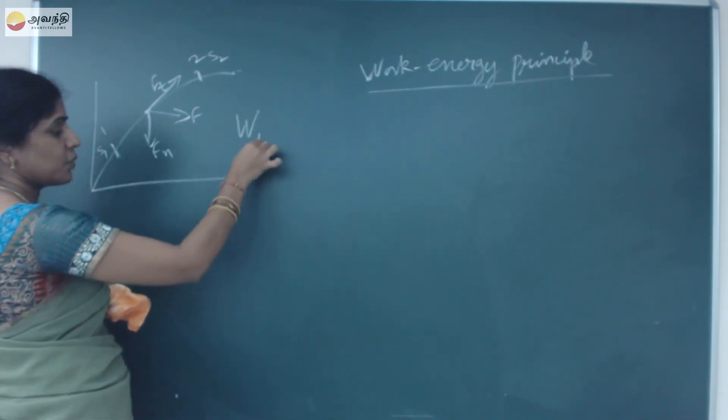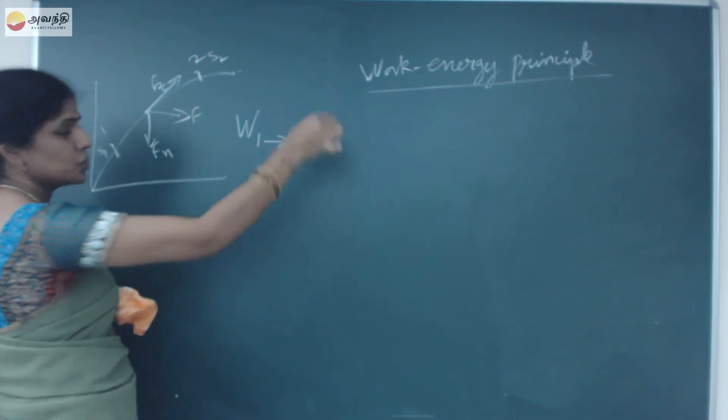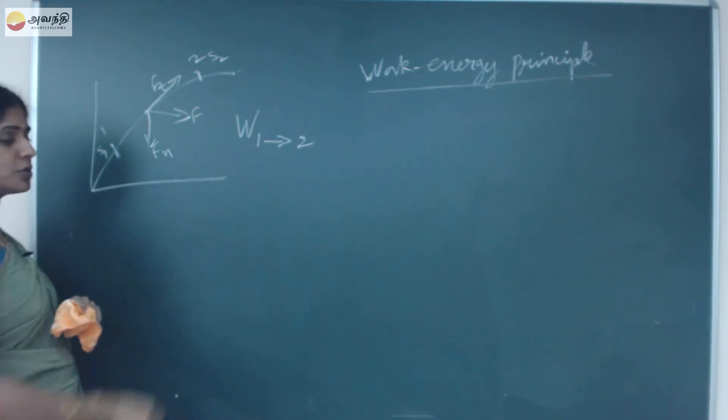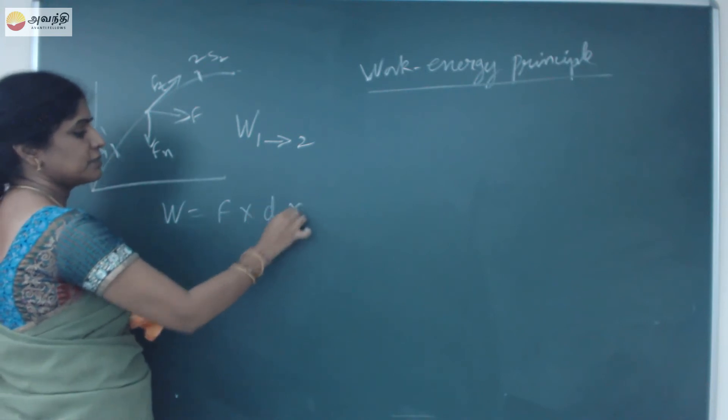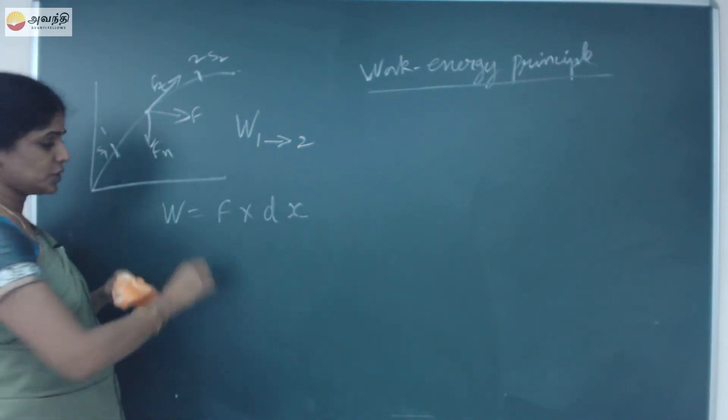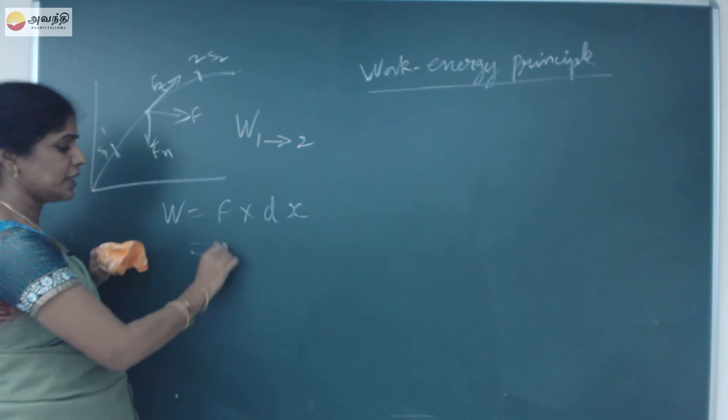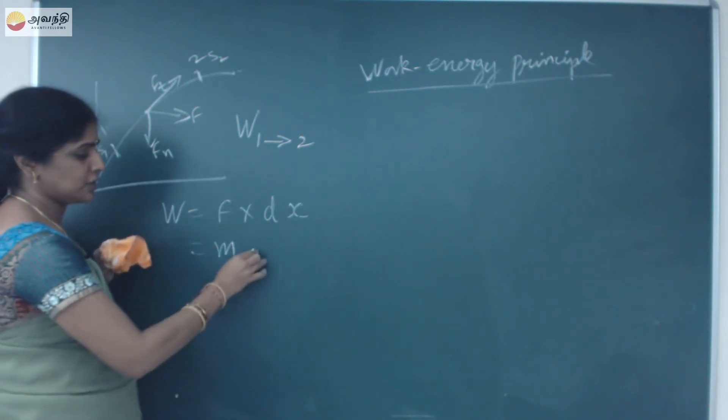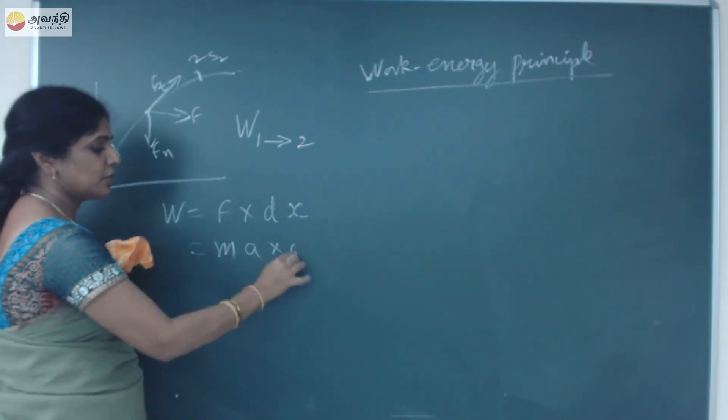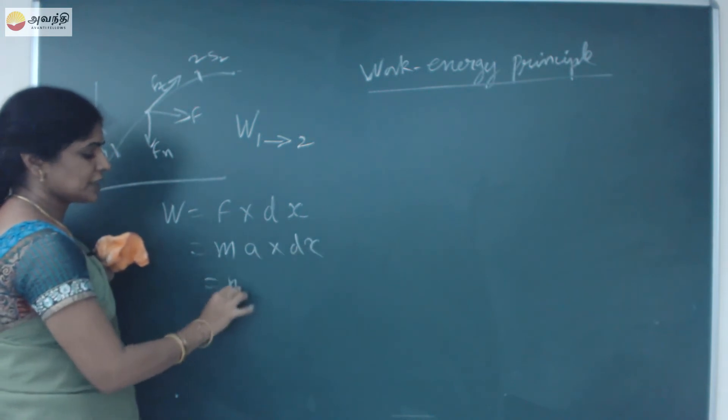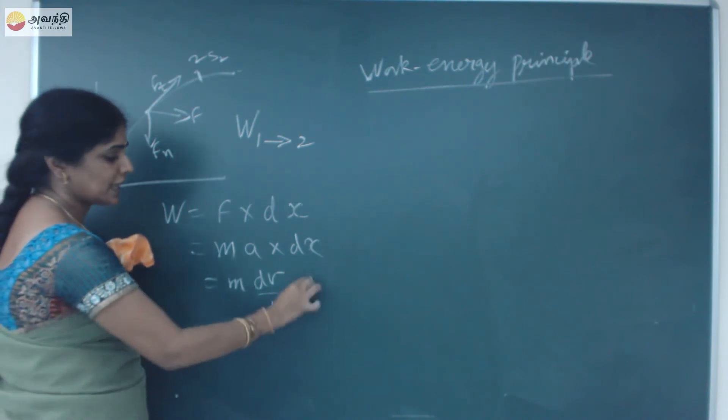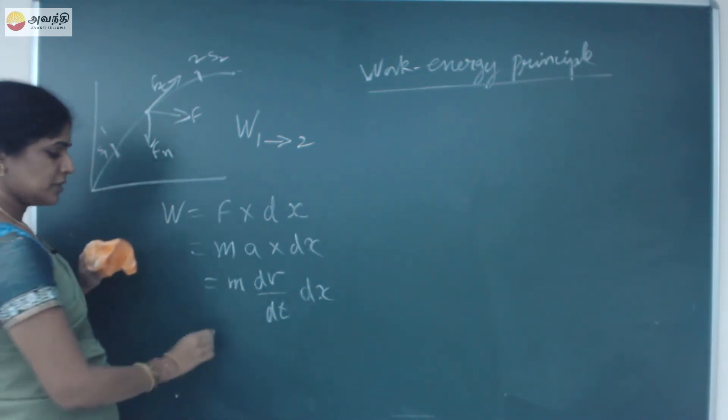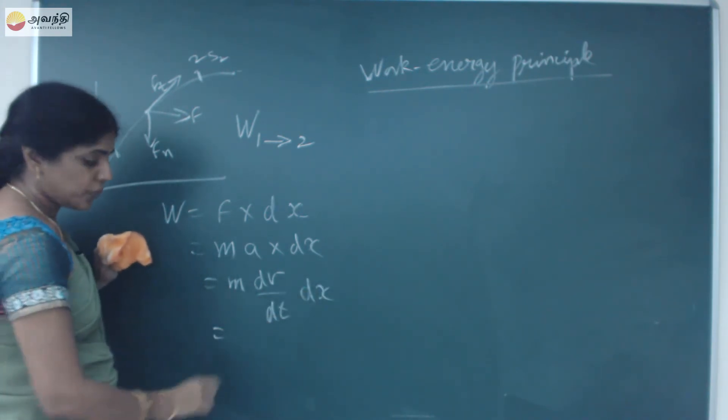Work done is equal to force into displacement. Force is equal to mass into acceleration: M into A into dx. My acceleration is dv by dt. That is rate of change of velocity is acceleration dx.